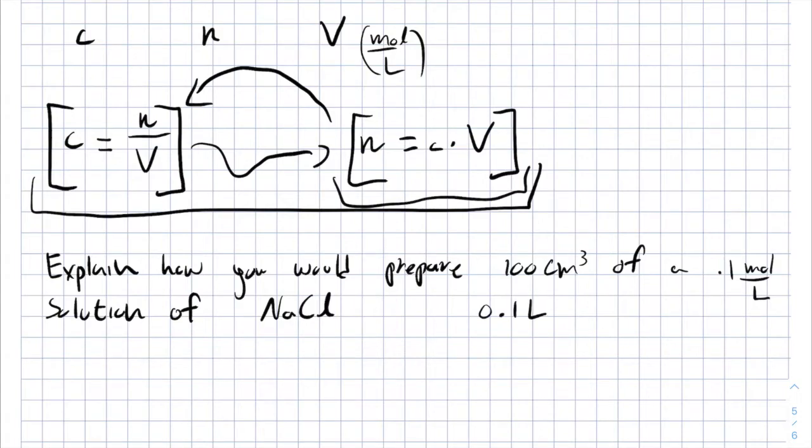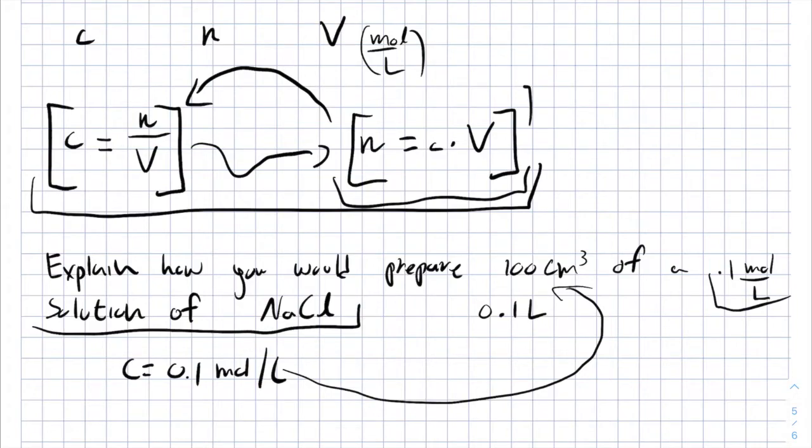Reading the question, we can see that our concentration is 0.1 mole per liter, and we only need 0.1 liters from it. Therefore, if we use the formula, you can see that 0.1 mole per liter times 0.1 liters will give you 0.01 moles, and therefore you will need 0.01 moles of NaCl in order to create 100 milliliters of 0.1 mole per liter solution of NaCl.